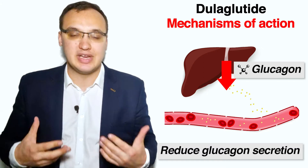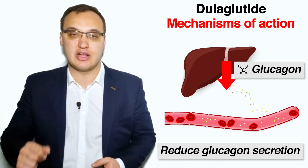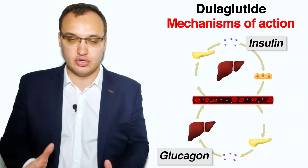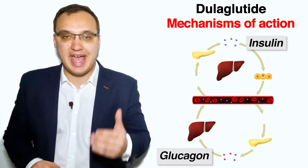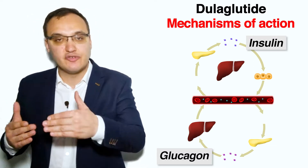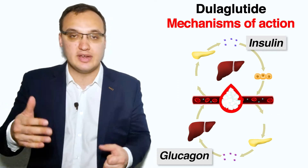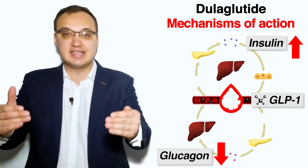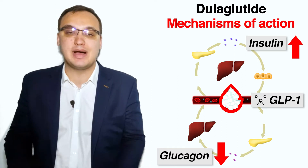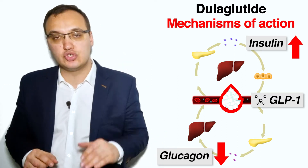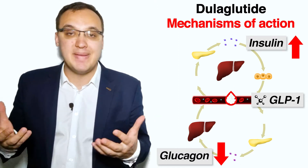The third mechanism of dulaglutide and GLP-1 receptors in general is to decrease the inappropriate glucagon secretion. Glucagon is a molecule, just like insulin, that works as a counterpart — meaning glucagon acts oppositely, promoting and increasing glucose in the blood. So when dulaglutide is in the body, it will decrease this inappropriate secretion of glucagon, causing a raised amount of insulin while having a reduced amount of glucagon, and thus reducing glucose in the blood — which is our main goal in diabetic patients.